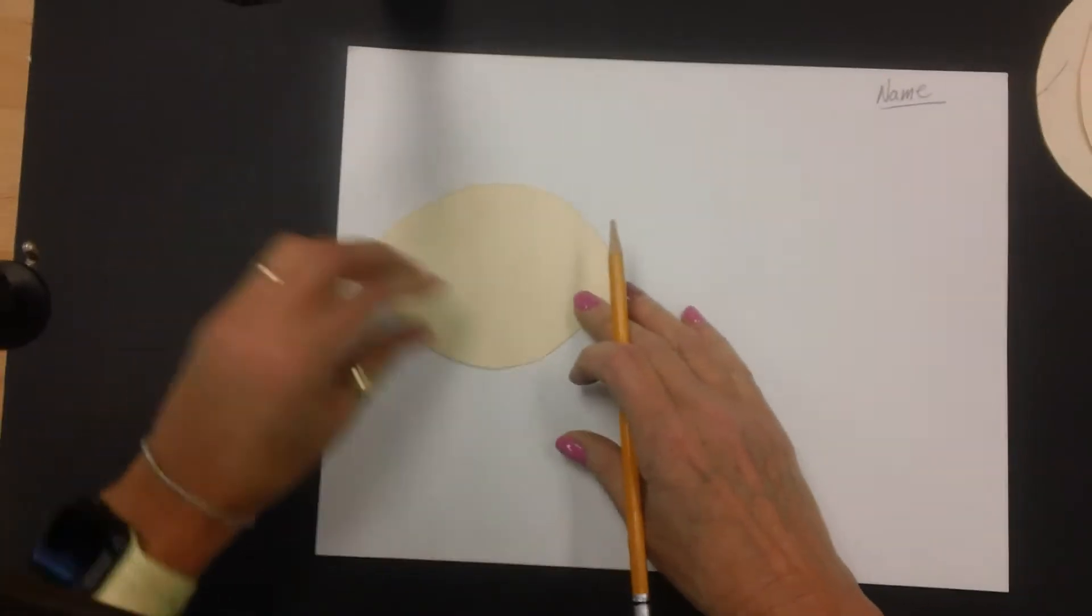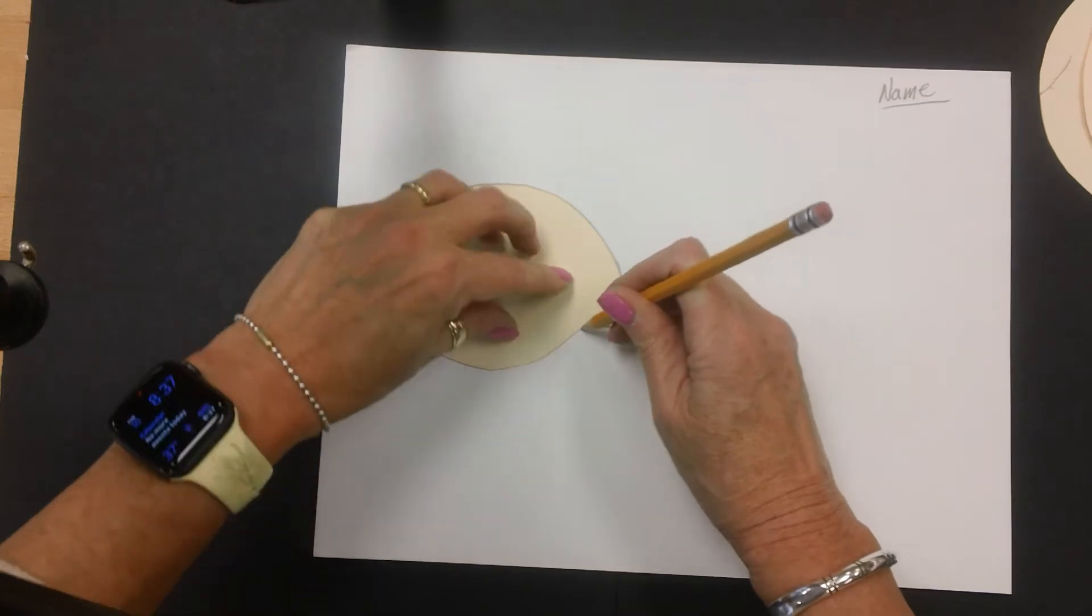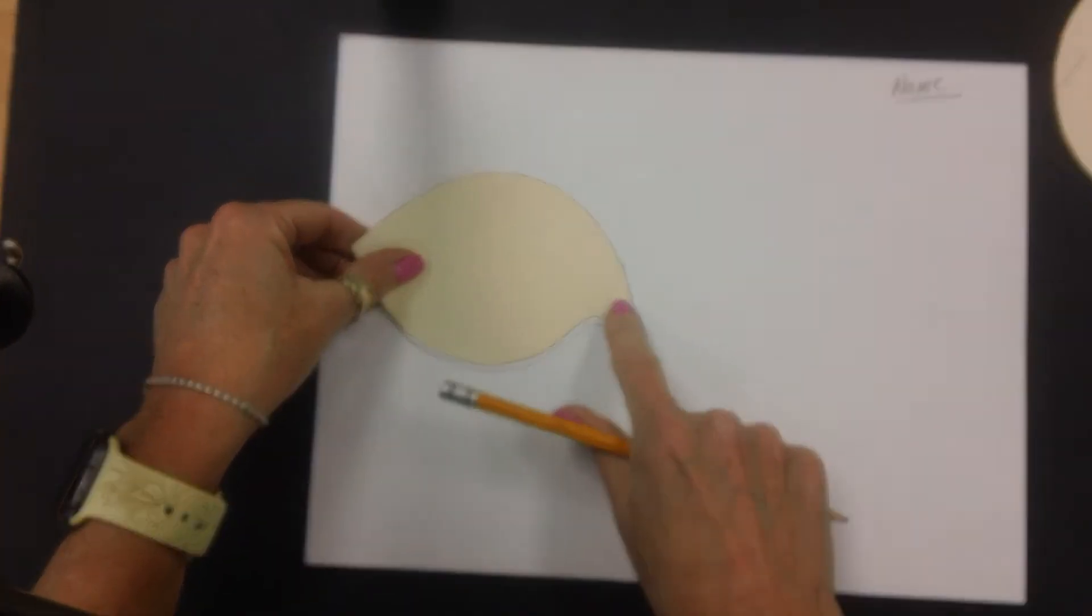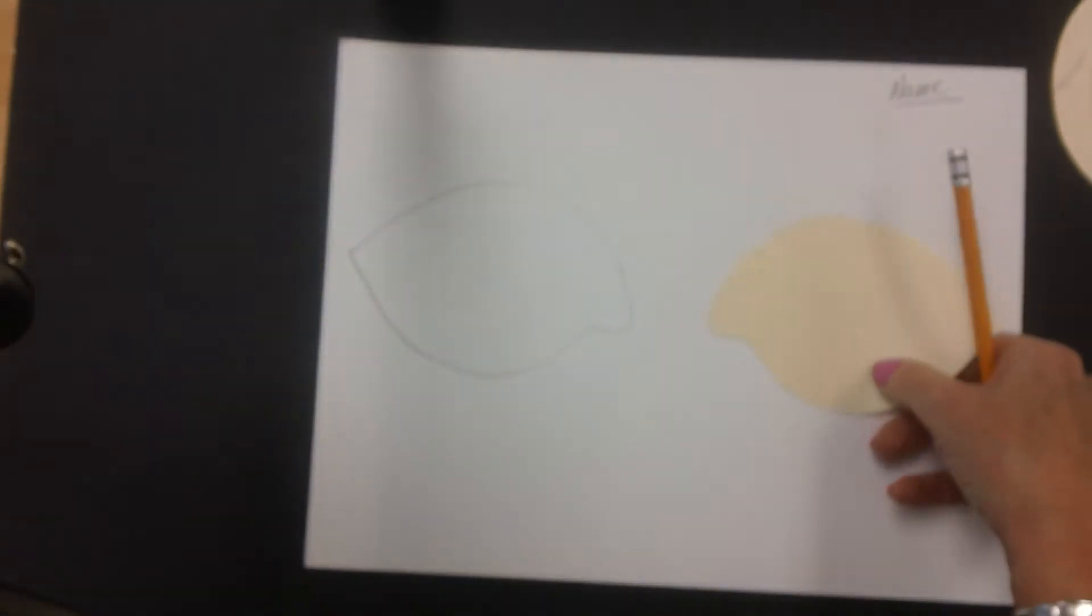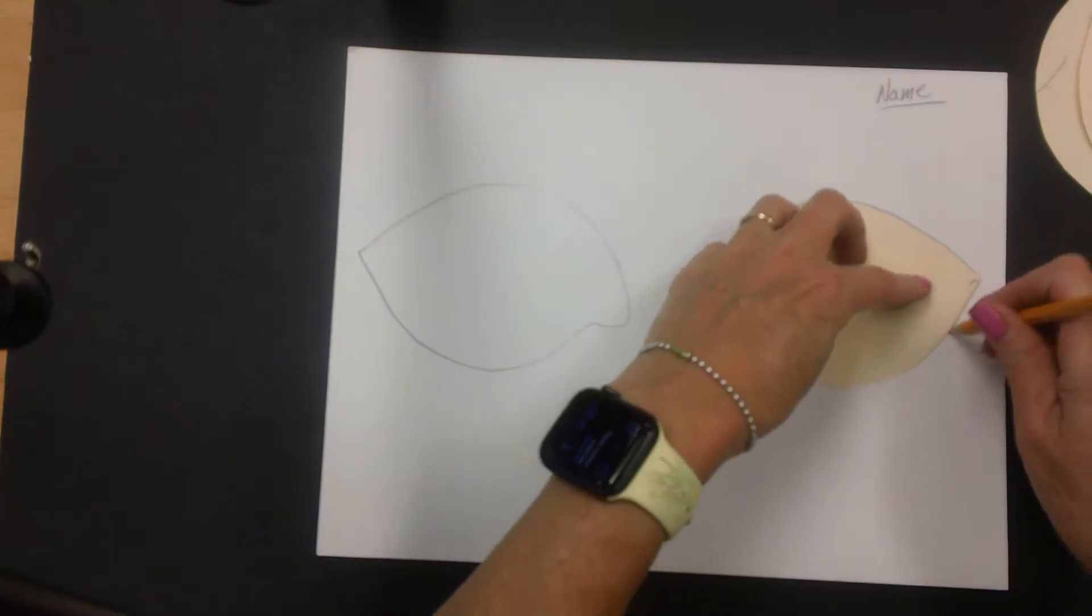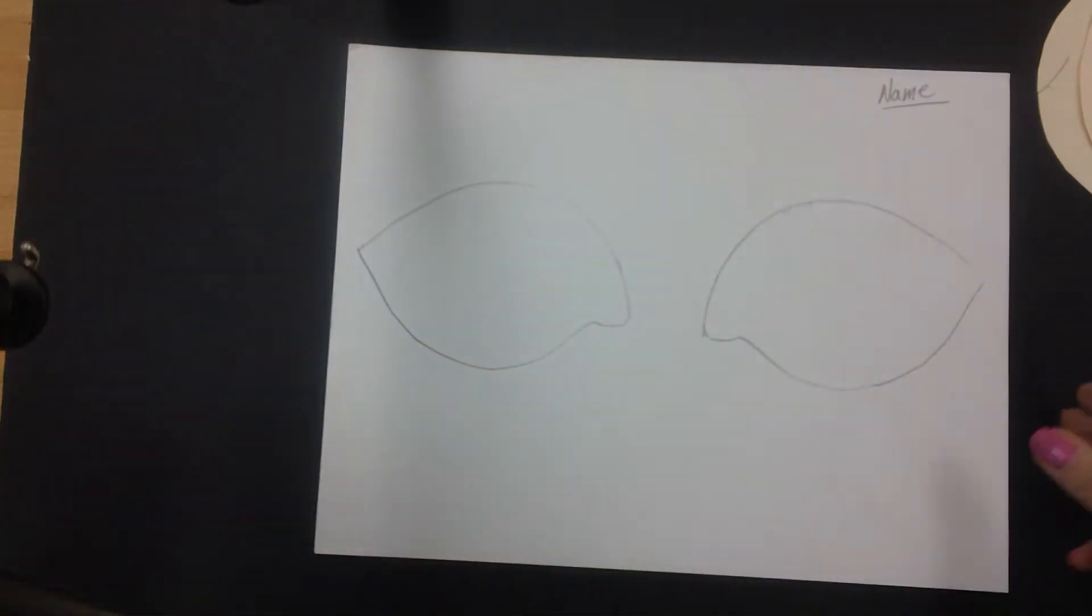So the first thing, of course, is to trace. And you're going to have to flip this tracer over because this is the center. And then I'm going to flip it over to make the other eye shape. So the left and the right. Alright, and I can put this back.